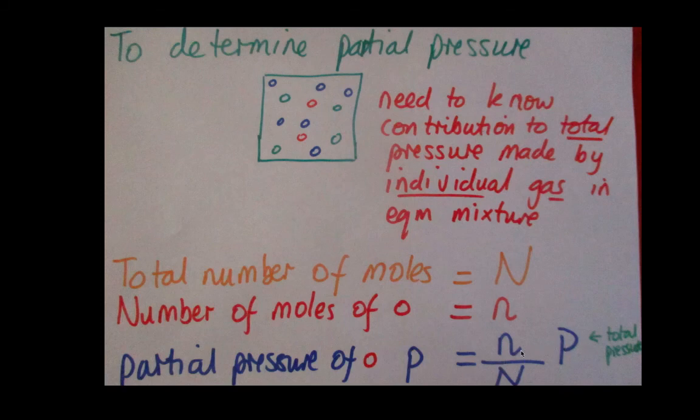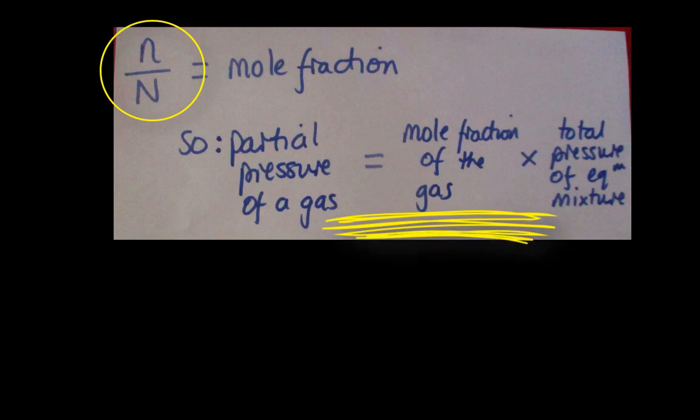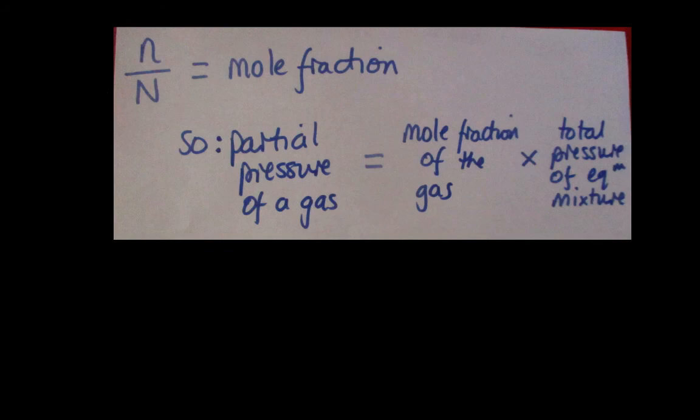So, for example, if we had four moles overall in our mixture, but only one mole came from our red gas, then a quarter of the total pressure would come from the red. So, n over N will be our mole fraction. So, that means the partial pressure of a gas will be this mole fraction times the total pressure. And, that's a general equation. But, it's good to understand where that comes from so that you can remember it.